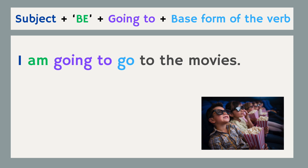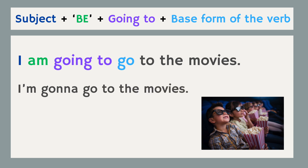It can be made informal in conversation with contractions and a reduction: 'I am' becomes 'I'm,' 'going to' becomes 'gonna,' 'go' is the base form of the verb, and 'to the movies' is our prepositional phrase indicating where this person is going. So: I'm gonna go to the movies.